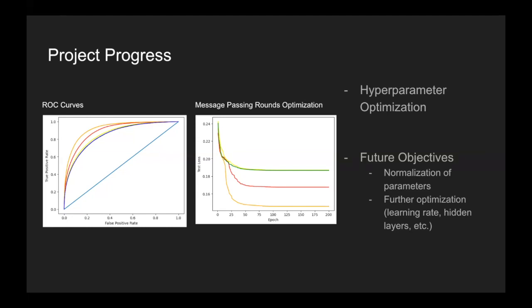Some of the future objectives that we have for this project is normalizing the parameters in order to produce more stability in the training process, as well as further optimization of the other hyperparameters. Thank you so much. Any questions for you? Yes.